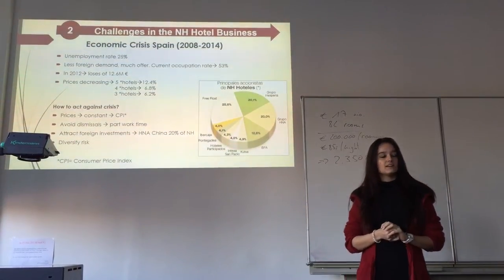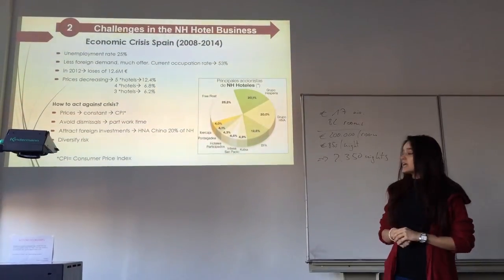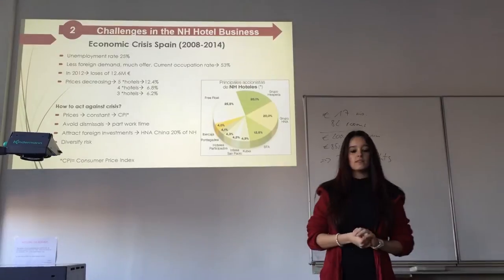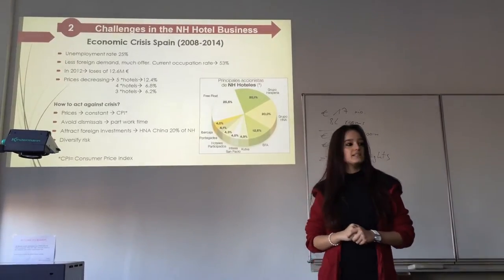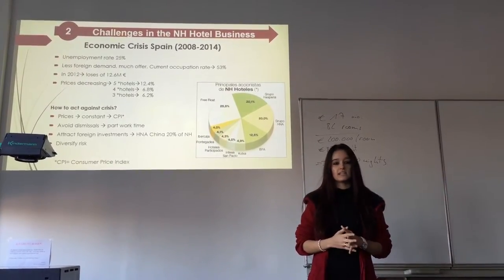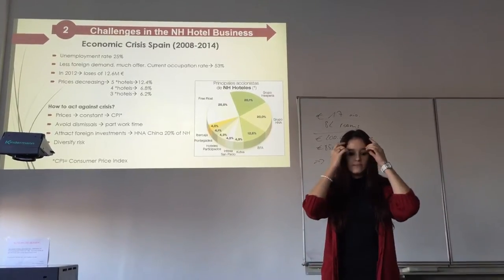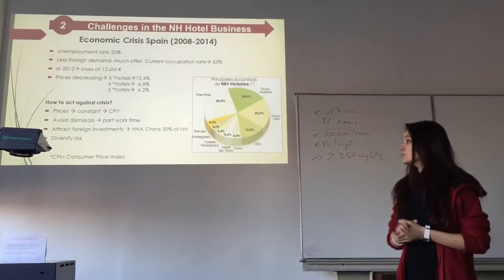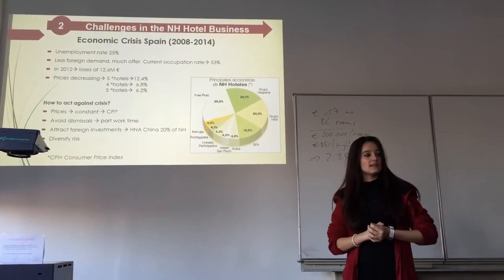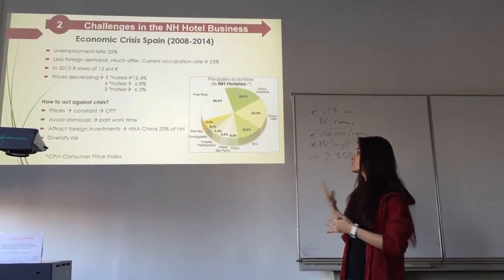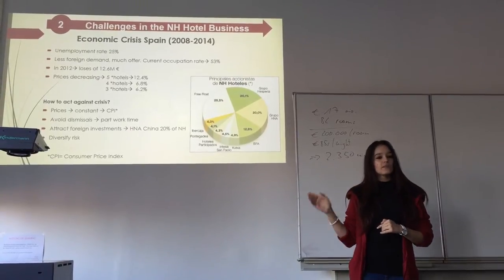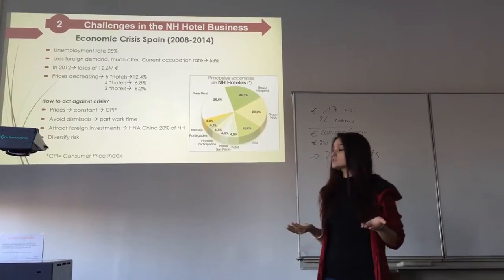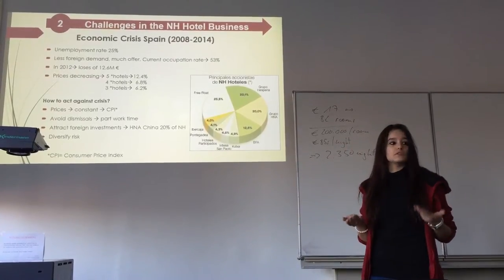The economic crisis in Spain started in 2008, and we'll talk about the period from 2008 to 2014. The unemployment rate currently is 25% in Spain — quite a high rate. How has it affected the hotel sector? There is less demand and much more supply, so the occupancy rate is 53%, as I said, and it should be higher. We're looking for alternatives and solutions to increase that rate.